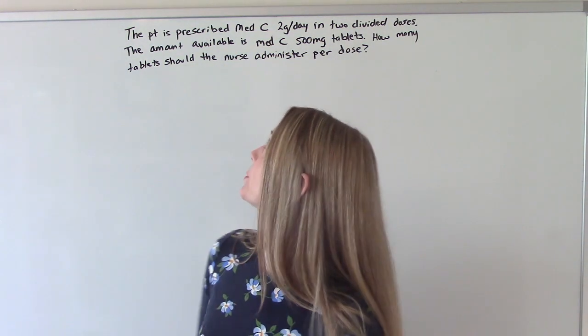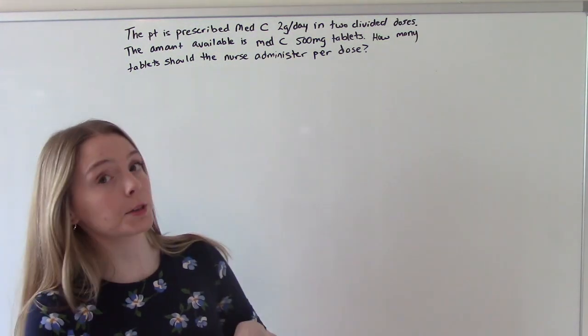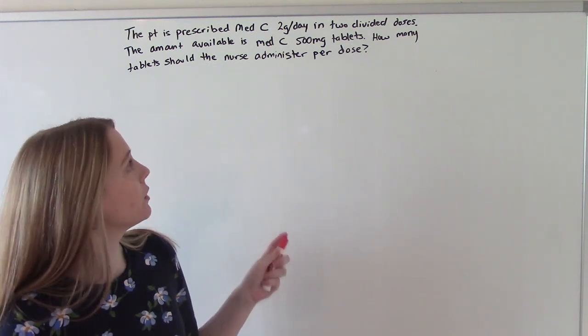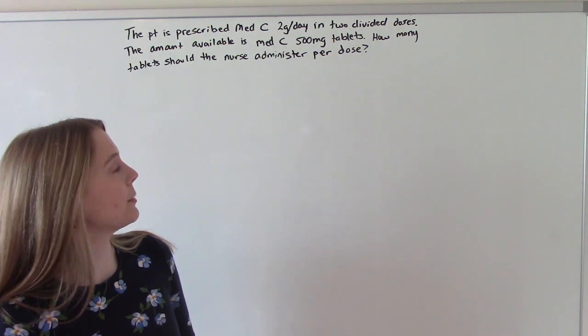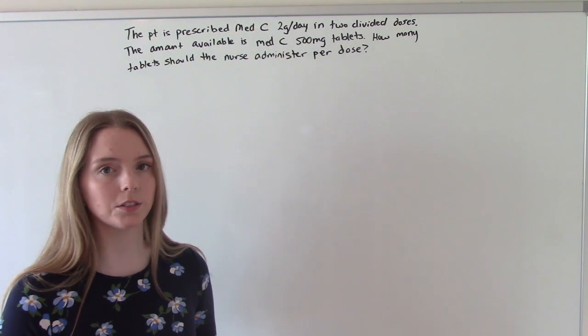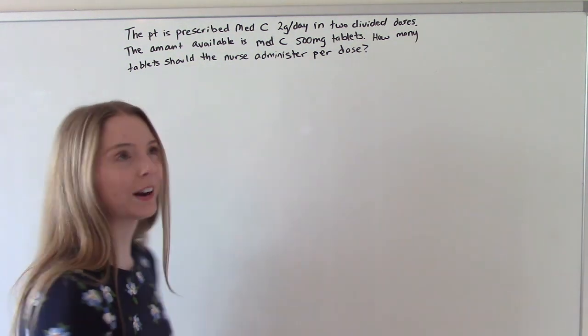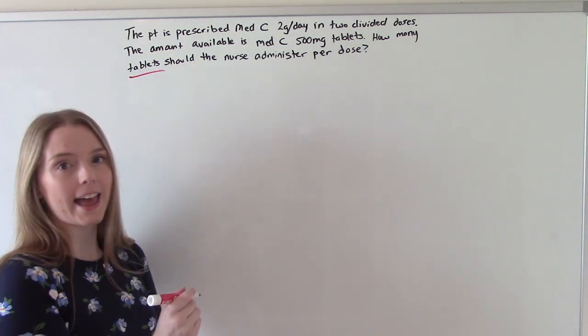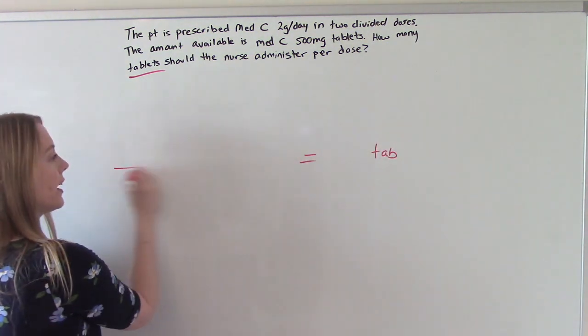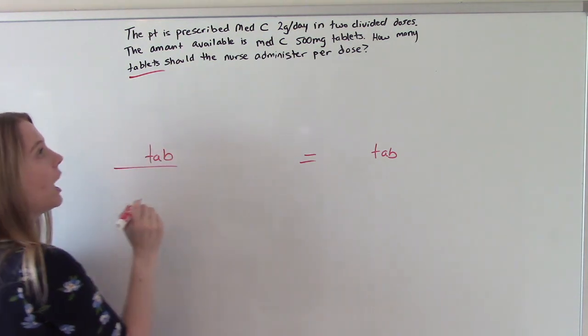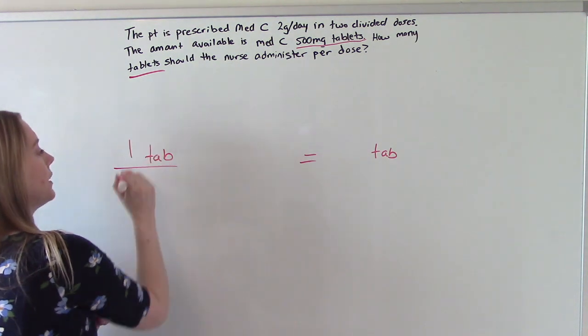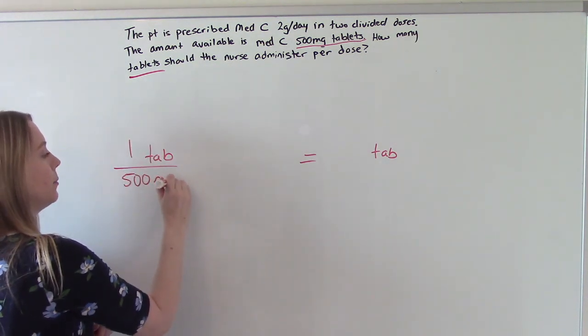So the patient is prescribed medication C, 2 grams per day, in 2 divided doses. The amount available is medication C, 500 milligram tablets. How many tablets should the nurse administer per dose? So what are we looking for in our answer? Tablets. So we'll put it over here. So if it's in our answer, it needs to be in our numerator. And where do we see it in our problem? Here. So one tablet is 500 milligrams.